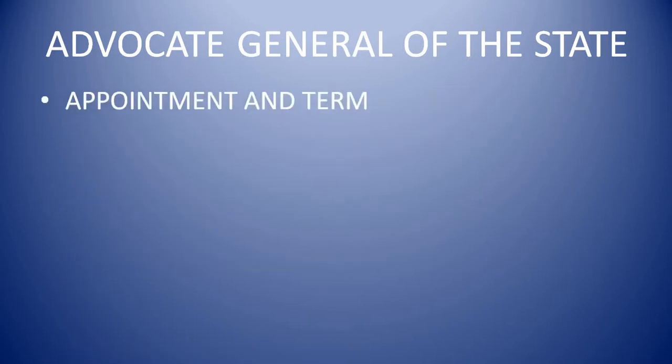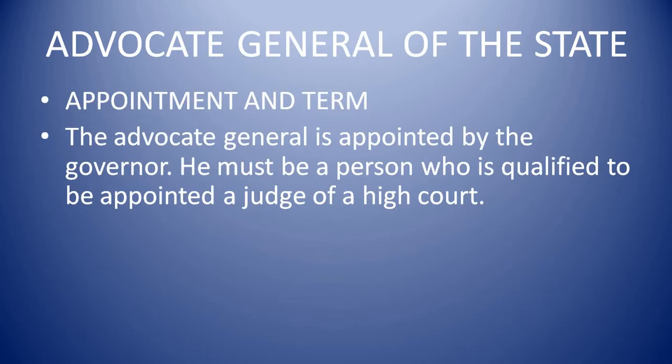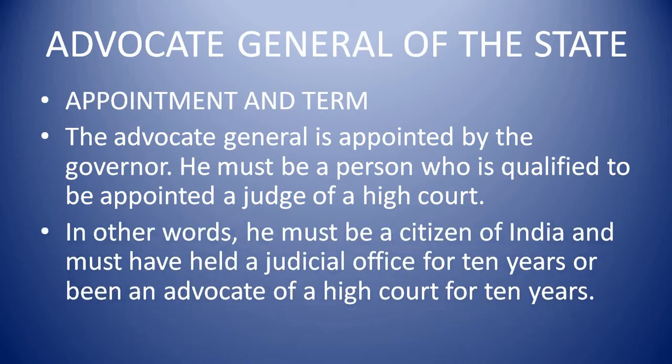Appointment and Term. The Advocate General is appointed by the governor. He must be a person who is qualified to be appointed a judge of a high court. In other words, he must be a citizen of India and must have held a judicial office for 10 years or been an advocate of a high court for 10 years.